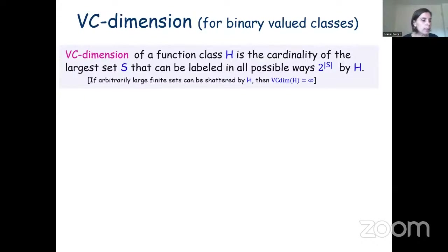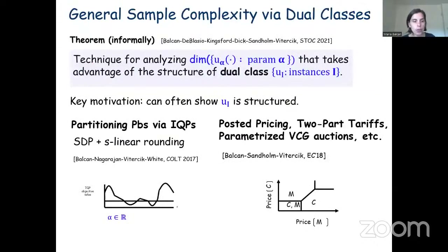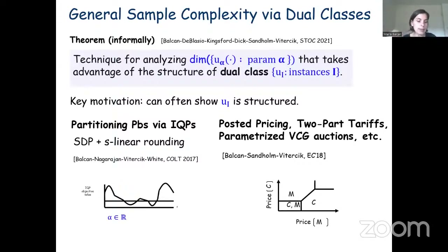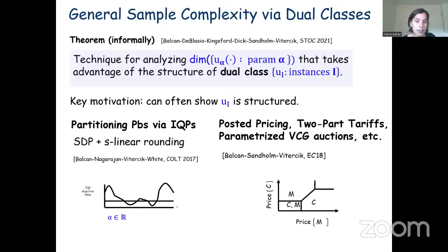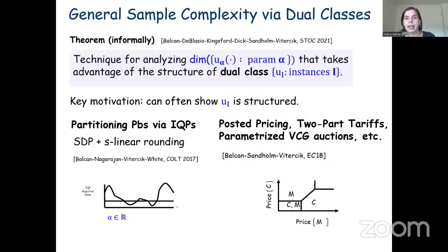Motivated by such case studies, we came up with a general theorem for analyzing sample complexity as a function of the structure of the dual class of functions. We thought it would be good to state a general theorem that can be used to provide sample complexity results in terms of a nice structural property of the dual class of functions. This is useful because it allows us to decouple the statistical aspects that lead to generalization bounds from the more structural aspects specific to each problem. Another nice thing is that once we have the right level of abstraction, the proof becomes cleaner and simpler.